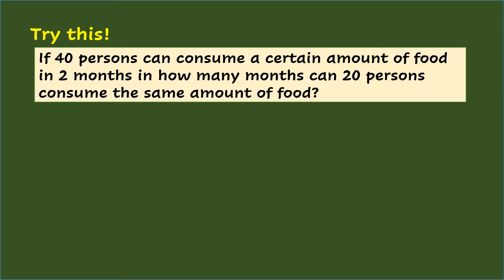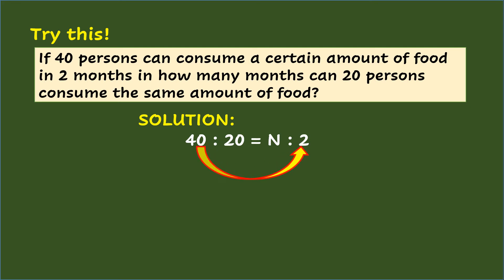Let's try this. If 40 persons can consume a certain amount of food in 2 months, in how many months can 20 persons consume the same amount of food? Setting up the ratios, the inverse proportion is 40 is to 20 equals n is to 2, wherein 40 is to 20 are both persons and n is to 2 are both months. Multiplying the pair: 40 times 2 equals 80. Dividing the product 80 by 20 equals 4. So the missing value is 4 months.